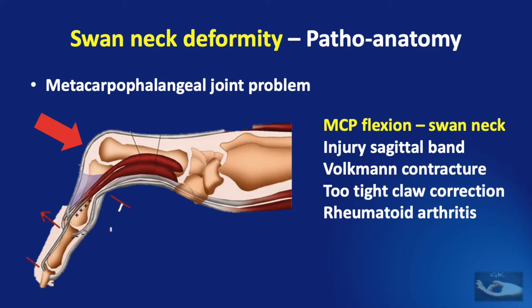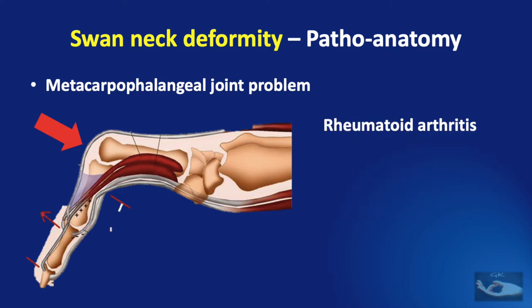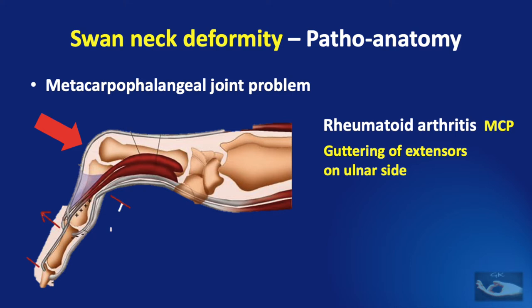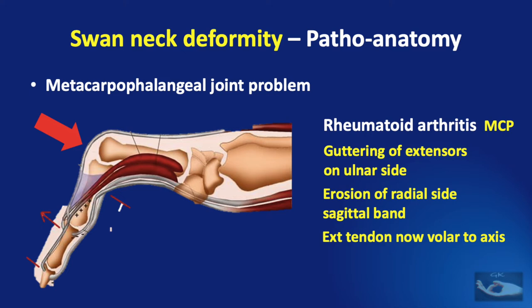Rheumatoid arthritis can affect any of the three joints. The way it affects the metacarpophalangeal joint is quite characteristic: due to increased forces on the ulnar side there is guttering of the extensors on the ulnar side, further aggravated by erosion of the radial side sagittal band. As the extensor tendon gutters deeper and deeper on the ulnar side of the metacarpophalangeal joint, it ultimately lies volar to the axis of the joint and almost becomes a flexor of the joint.